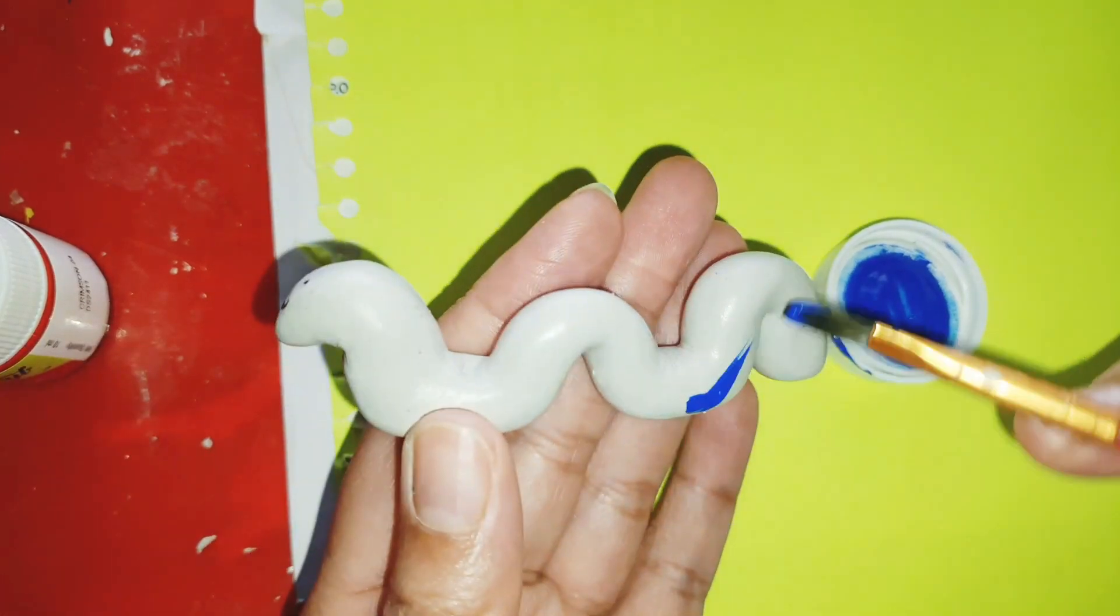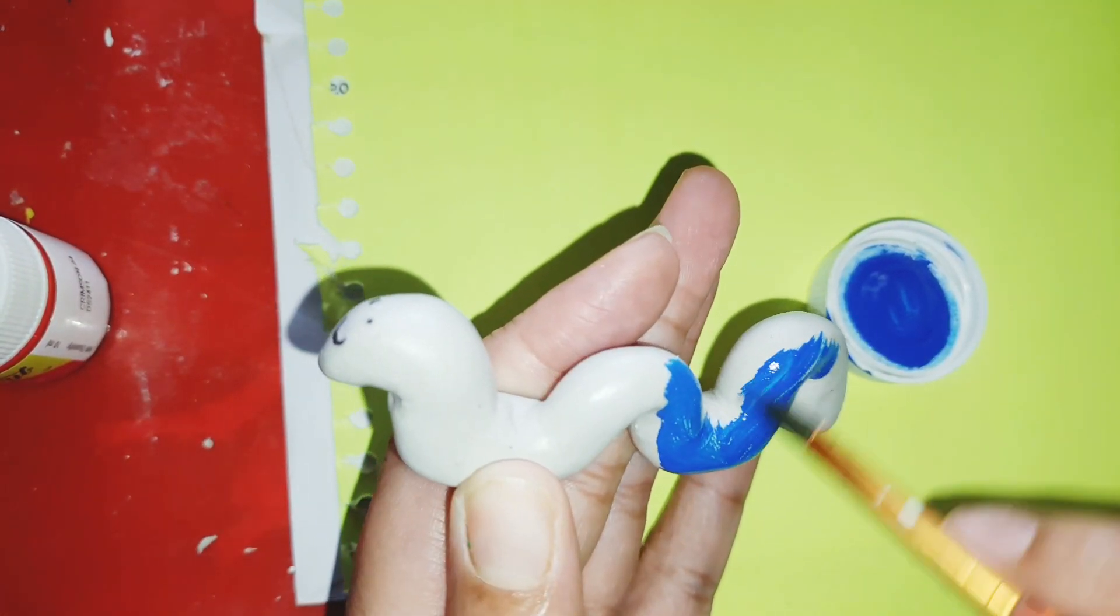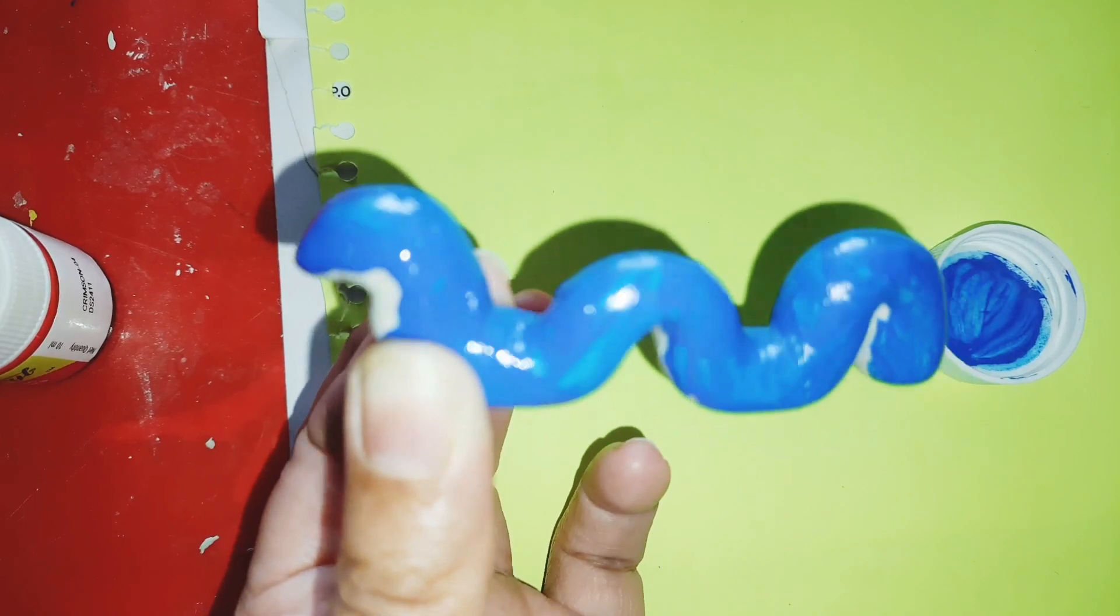So to hold the shape, I just kept a paint bottle cap. Now I'm going to color this after drying.